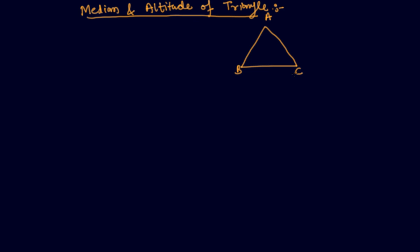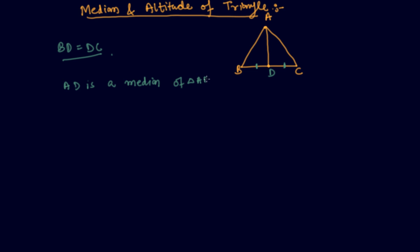So what is a median? A median is a line from any vertex which divides the opposite side into equal parts. If I draw a line from vertex A to side BC and it divides BC such that BD equals DC, then AD is a median of triangle ABC.